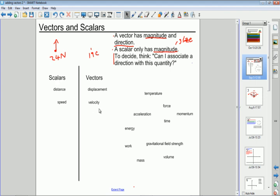Okay let's see if we can place these others. All right well let's start at the top. Temperature, we've already discussed, no direction associated with that so that is a scalar. Force is a vector because it has a direction.